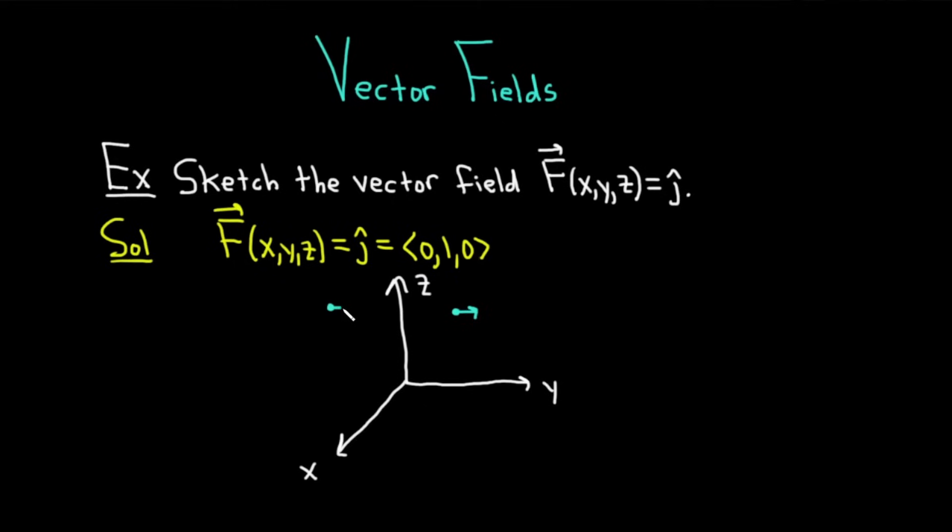If I pick one here, I get the same thing. If I pick one here, I get the same thing. What if I pick one down here? I get the same thing. So basically, you have all of these vectors, and they all have length 1, and they're all going in the direction of the y-axis. Really cool, right?